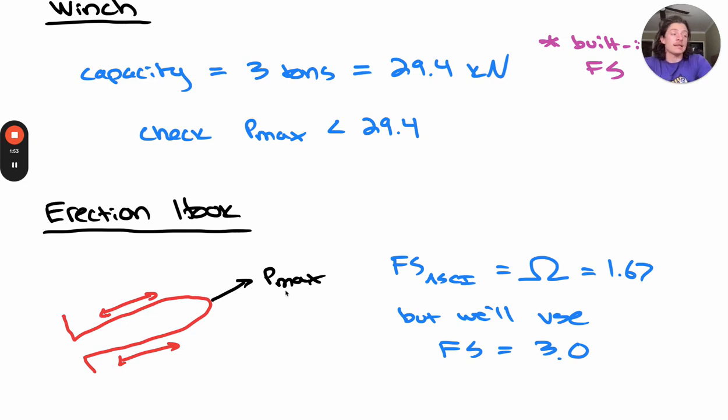The ASCE for bar in tension gives a factor of safety for ASD of 1.67, but we're going to use a factor of safety of 3.0 here because this is a very dangerous process. Failure of an erection hook would cause significant damage to the bridge and pose a major threat to any worker's health or anyone nearby.